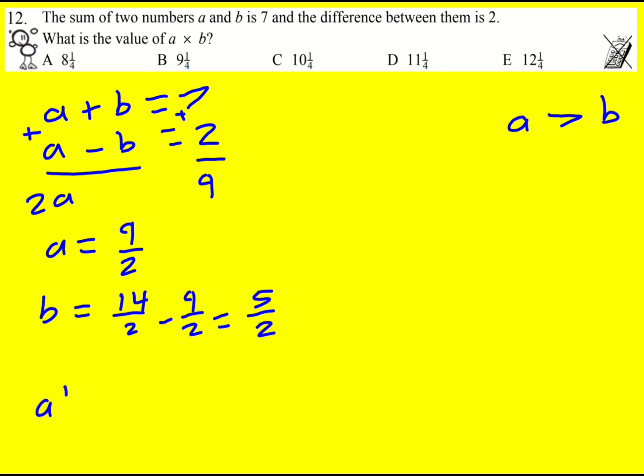So if I'm asked for what ab is I can just times them. I'm going to get 9 over 2 times 5 over 2, 45 over 4, which is going to be 11 remainder 1 so 11 and a quarter in the final answer.